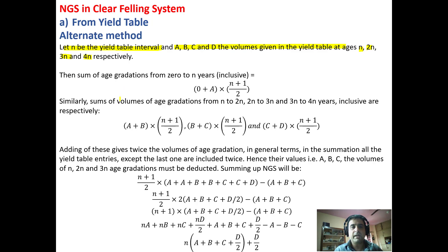To calculate the total growing stock we have to add up all the volumes. Sum of age gradations from 0 to N, with an interval of N years, will be given by this formula: (0 + A) × (N + 1)/2. Similarly, sum of volumes of age gradations from N to 2N, 2N to 3N, 3N to 4N are included respectively.